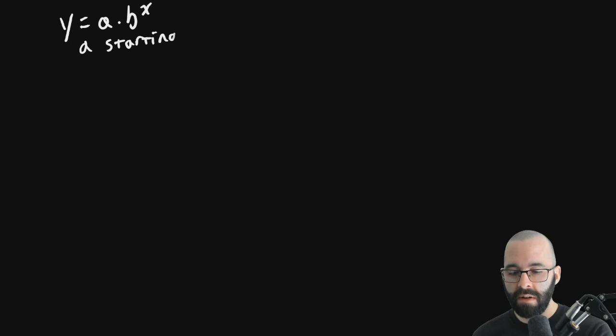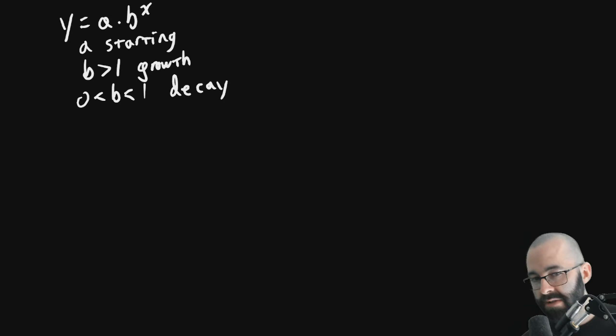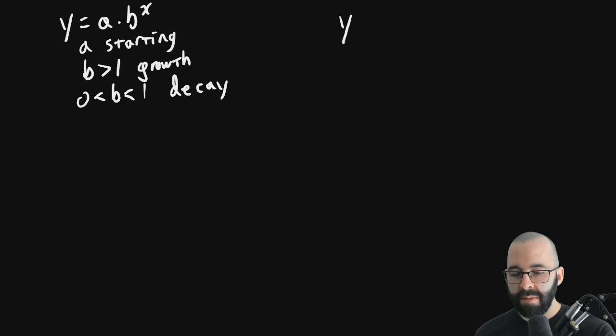Let's generalize to some more things with E. So remember earlier, we said this is exponential growth and this is sometimes decay. A was a starting value and if B was bigger than one, then it was growth and if B was between zero and one, it was decay. This is review. This is from the first video here. Well, we're going to have something very, very similar with a different formula.